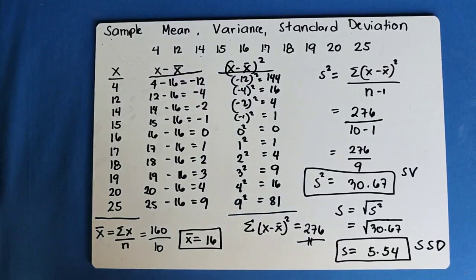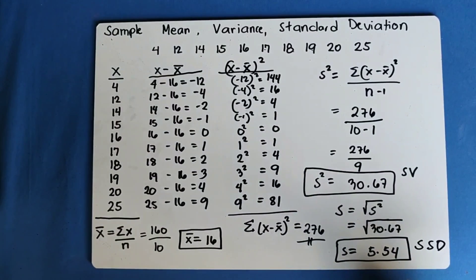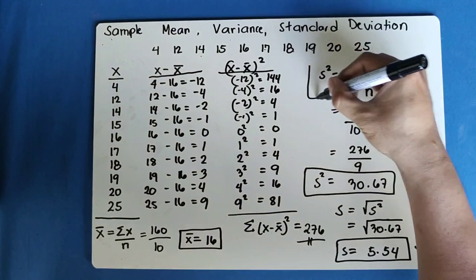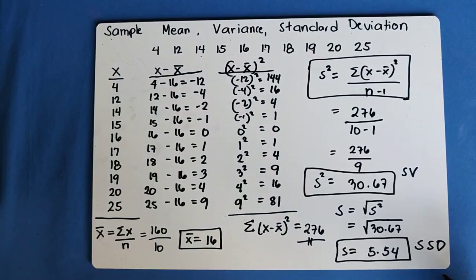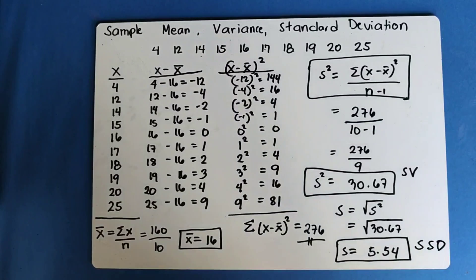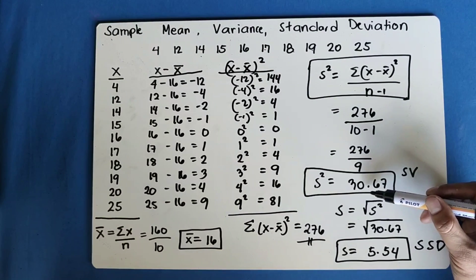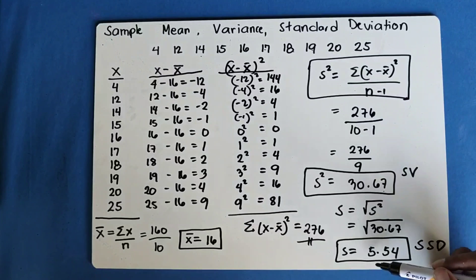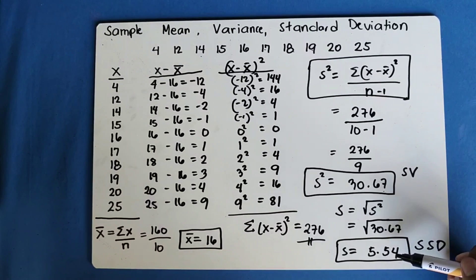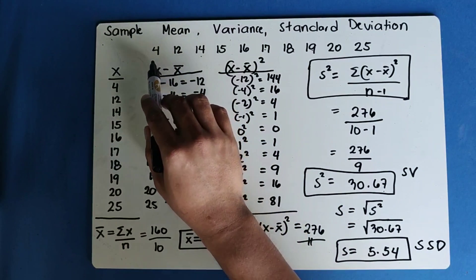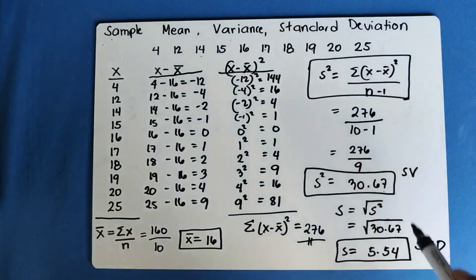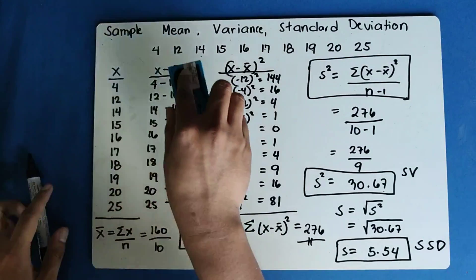There are two formulas in getting the sample variance. We just used the first formula. In the next video, I will discuss solving the sample variance using the second formula. Please take note: our sample variance is 30.67, and our sample standard deviation is 5.54. Now let's try to solve sample variance and standard deviation with the same data using the second formula.